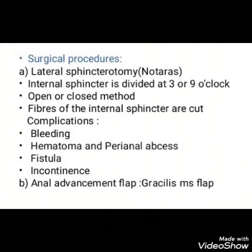Surgical treatment for fissure includes lateral sphincterotomy, where the internal sphincter is divided away from the fissure either in the right or left lateral position. The procedure can be easily done using a bivalved speculum in the anal canal. Complications of this procedure include incontinence, fistula, bleeding, hematoma, or perianal abscesses.